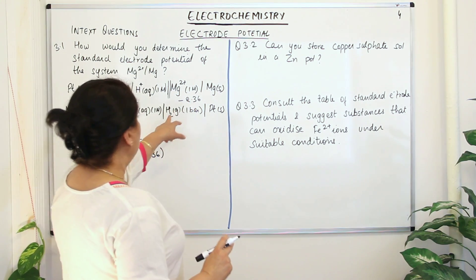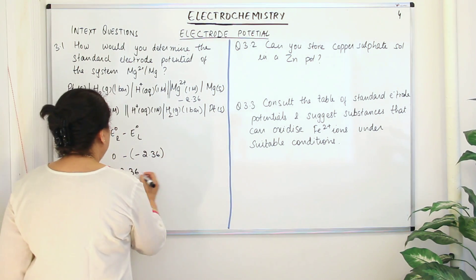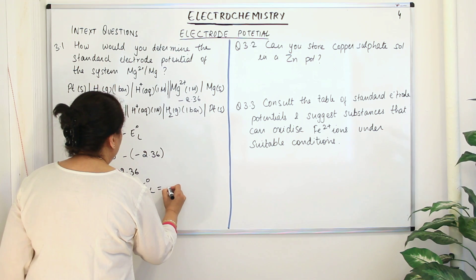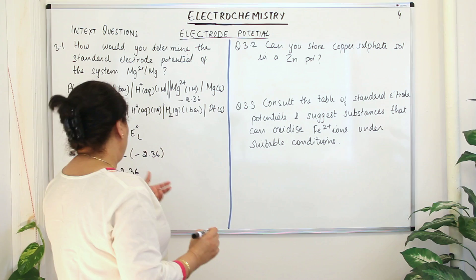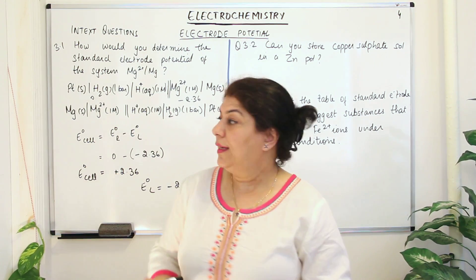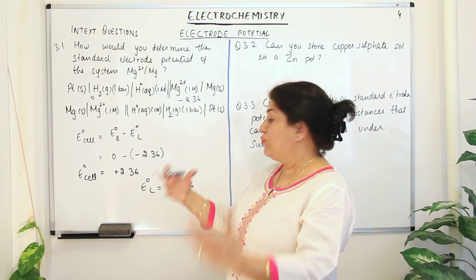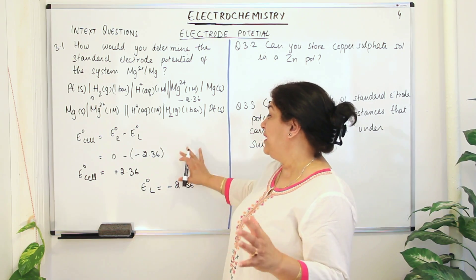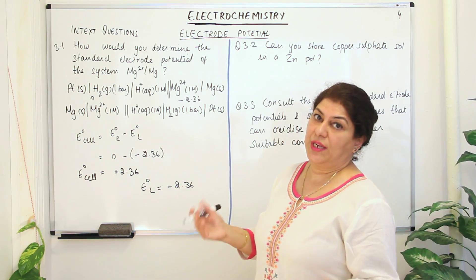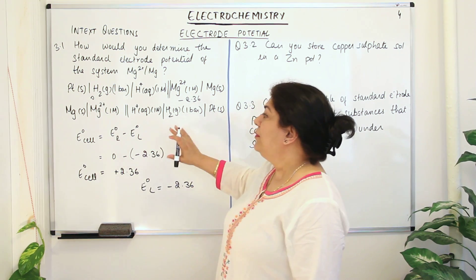We know that E°right minus E°left gives the EMF, so the electrode potential of the left electrode will be the negative value of E°cell. Therefore E°left will be −2.36 V. When you carry out this experiment, the ammeter reading — the potential difference — will be +2.36 V, and the negative of that value gives you the electrode potential for the magnesium electrode, which is −2.36 V.